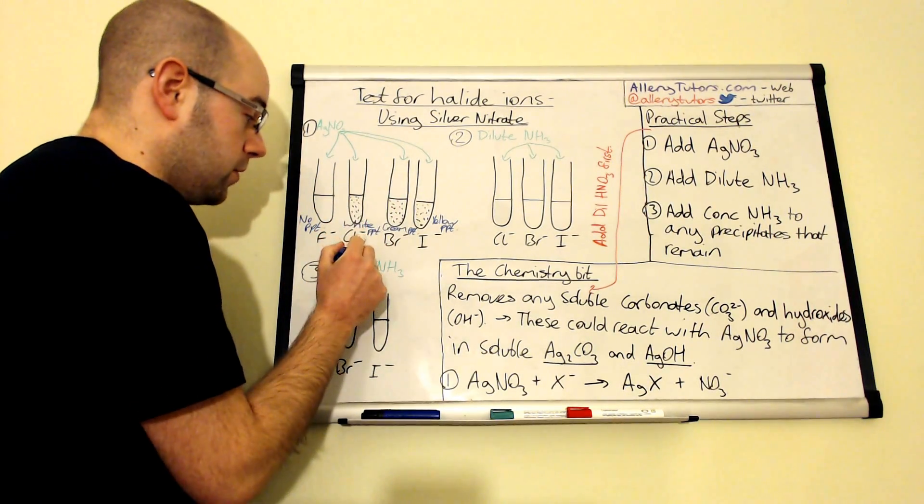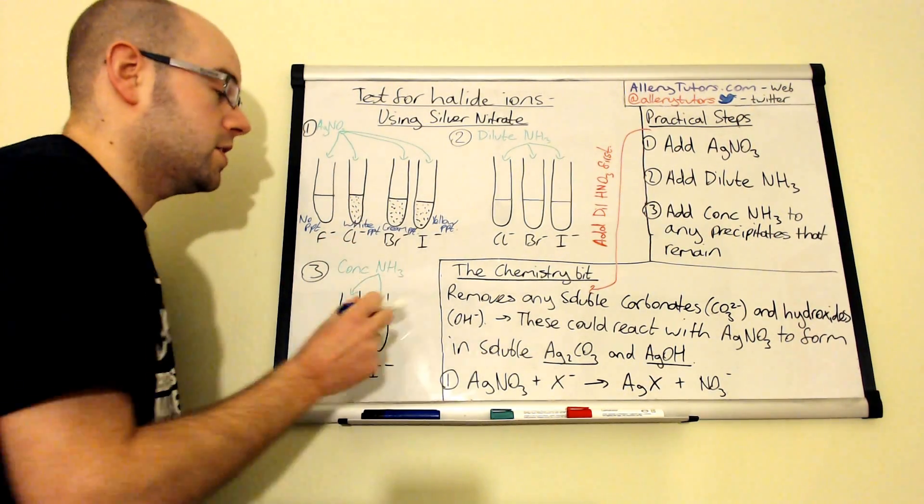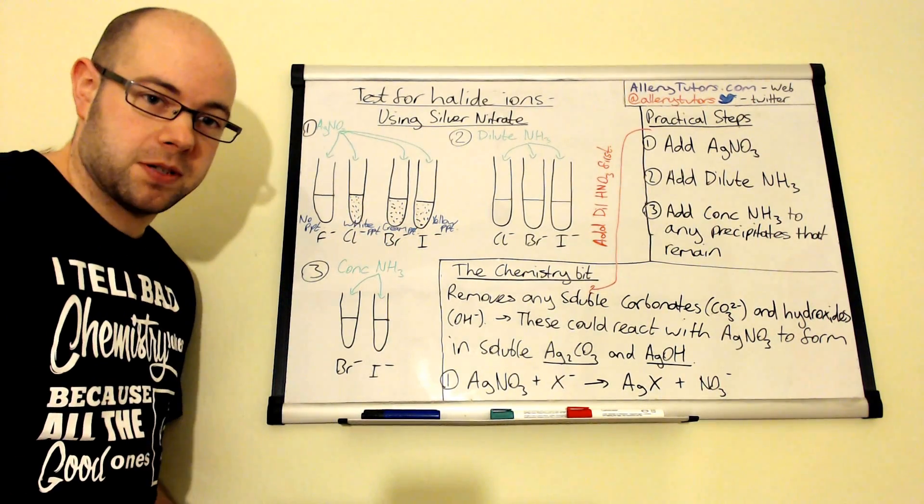Silver fluoride is formed, but it's soluble. These ones here, silver chloride, silver bromide, and silver iodide are insoluble. And so that's why we see it as a precipitate.